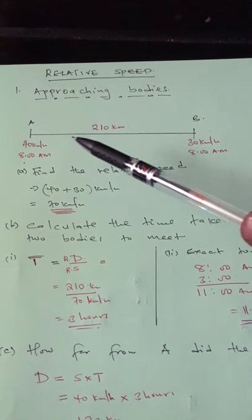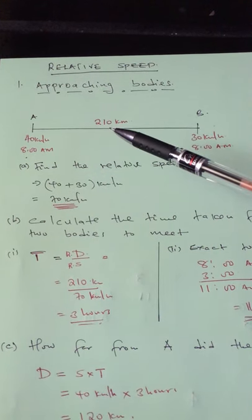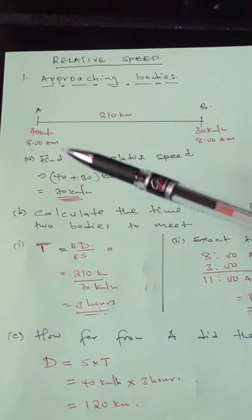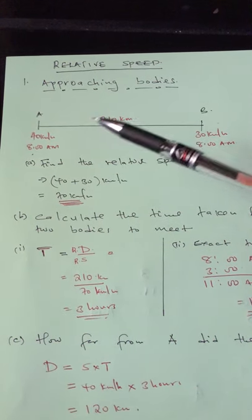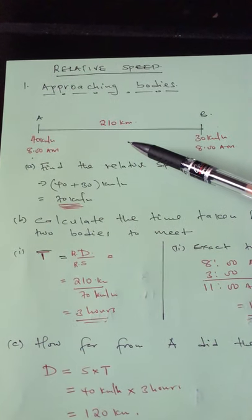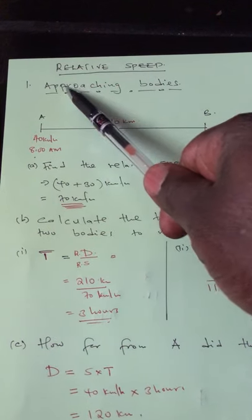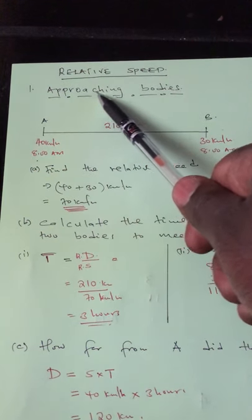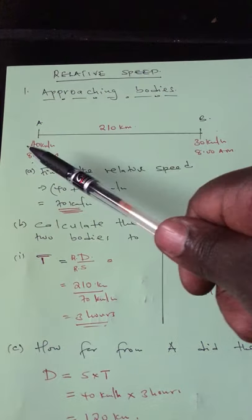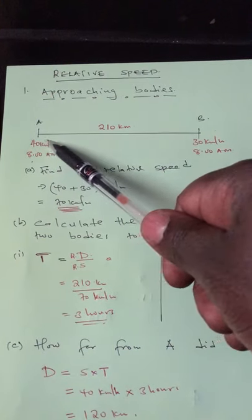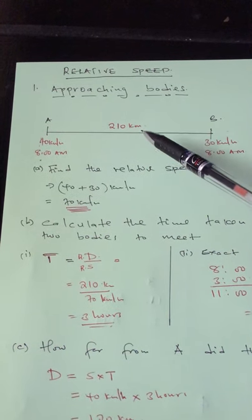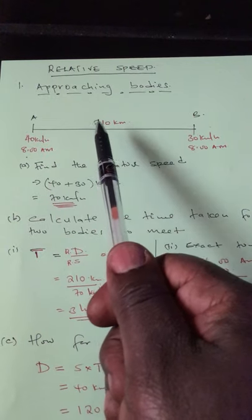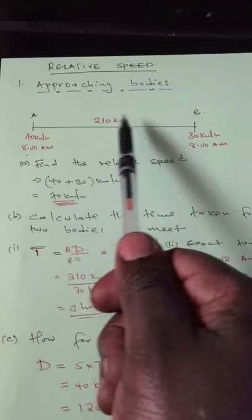To start with, let me use this illustration to explain the first parts of relative speed. In relative speed, there are two different cases: there are approaching bodies, and bodies moving in the same direction. Approaching bodies are two bodies which tend to move in opposite directions so that they meet at a given point. On my sketch, I've shown a line representing a distance of 210 kilometers between two points, A and B.